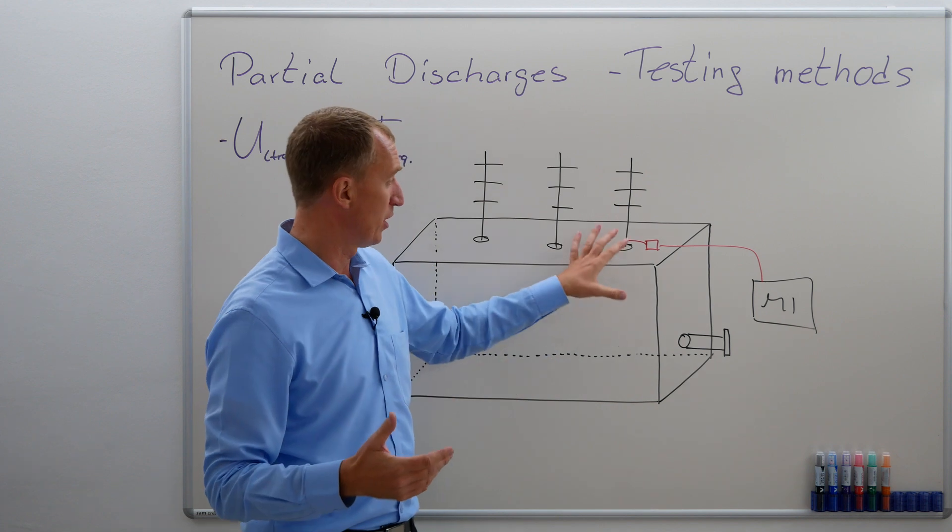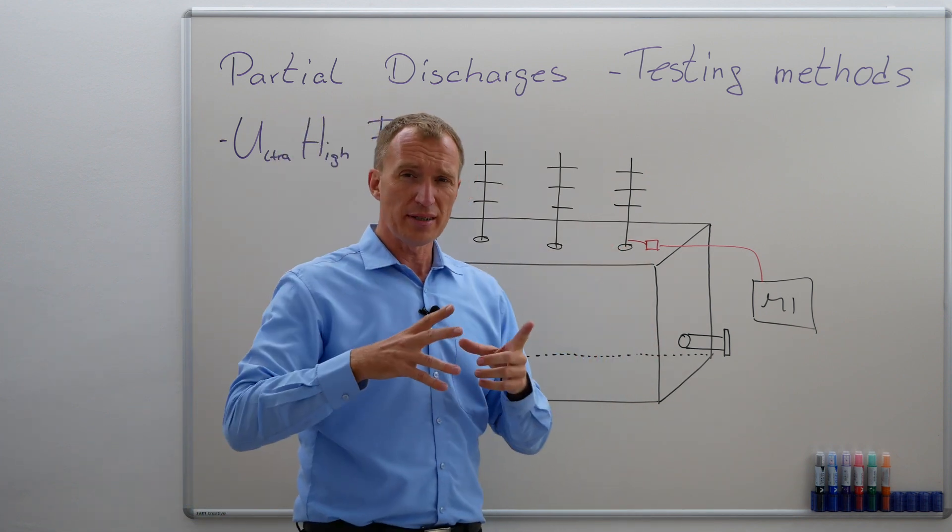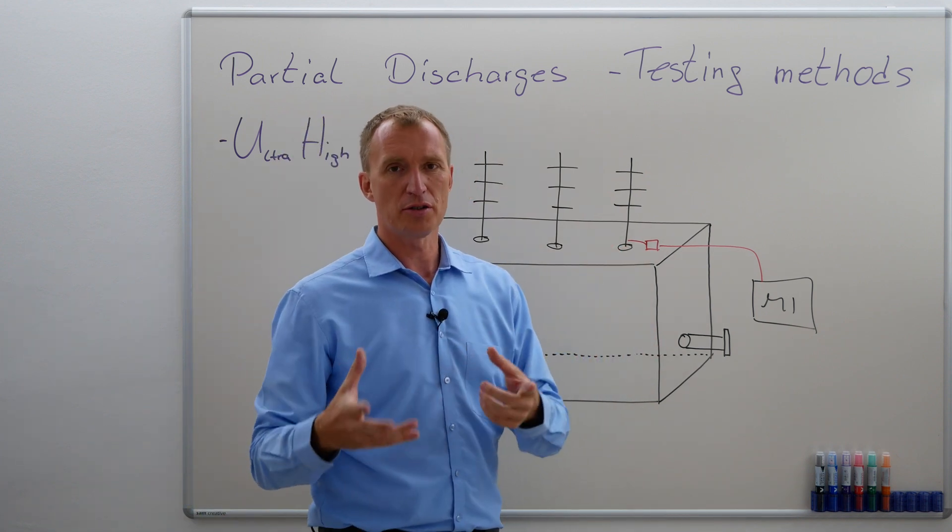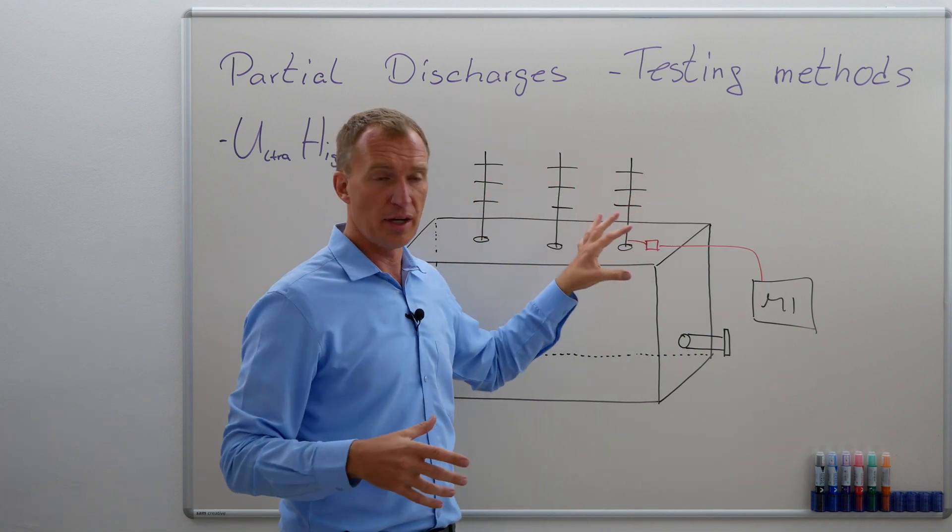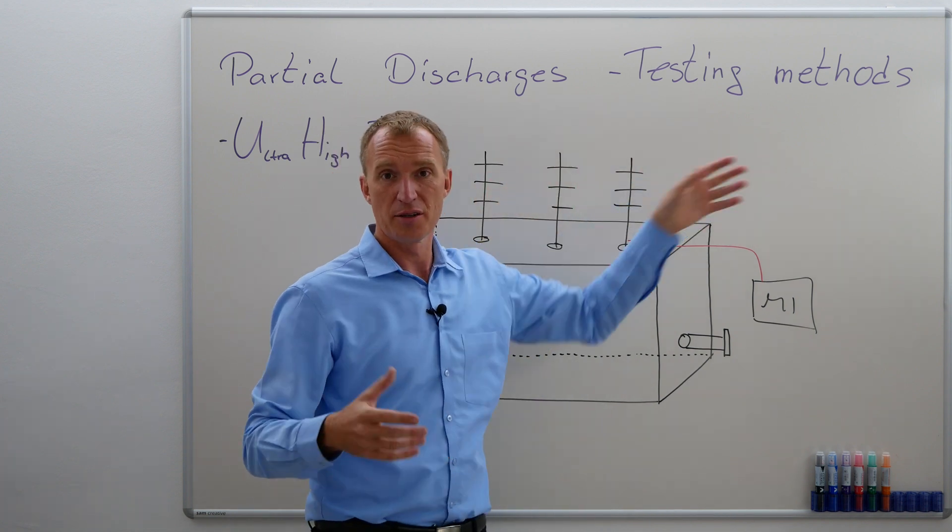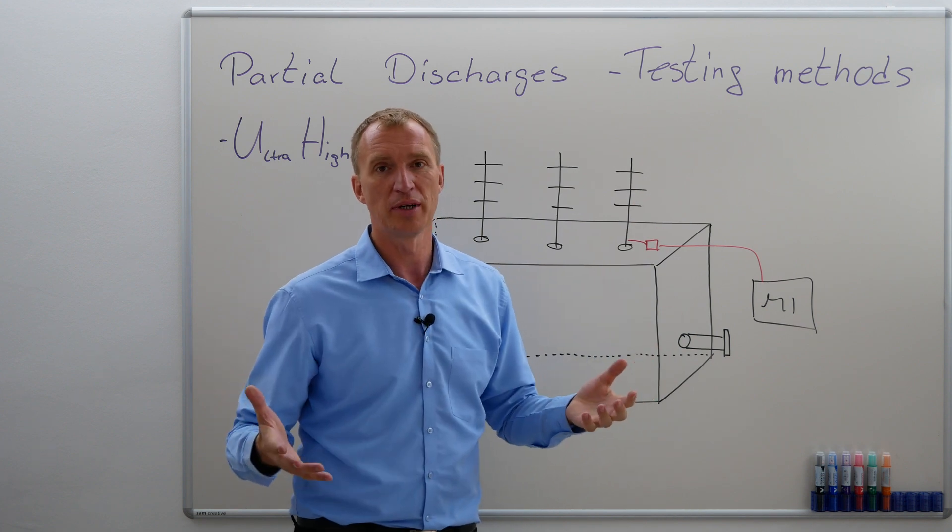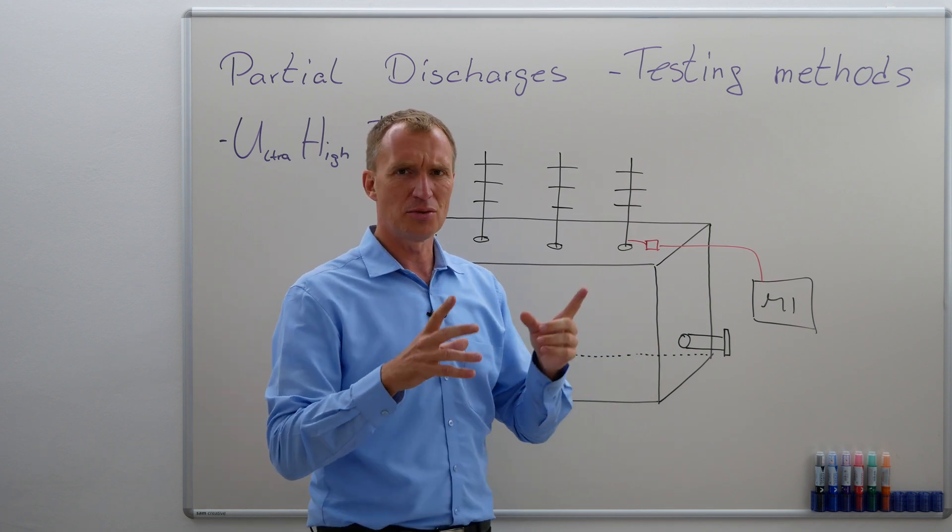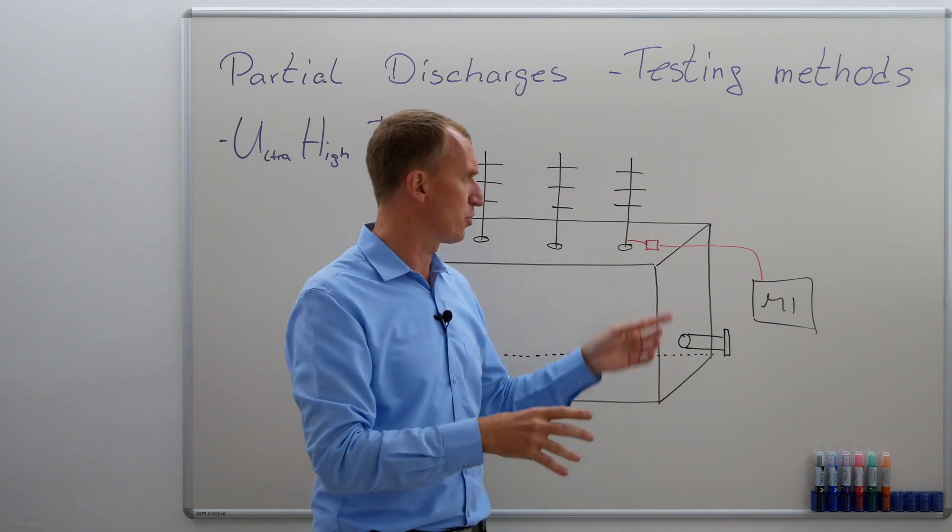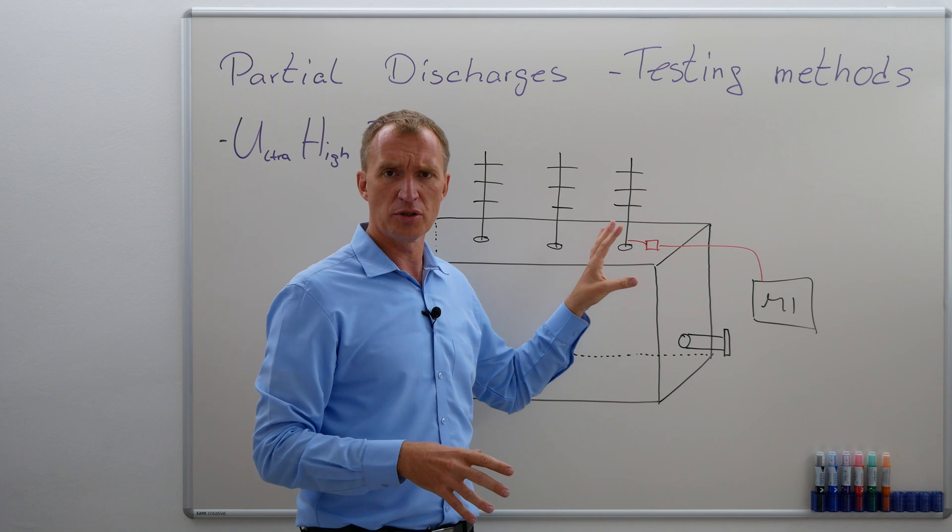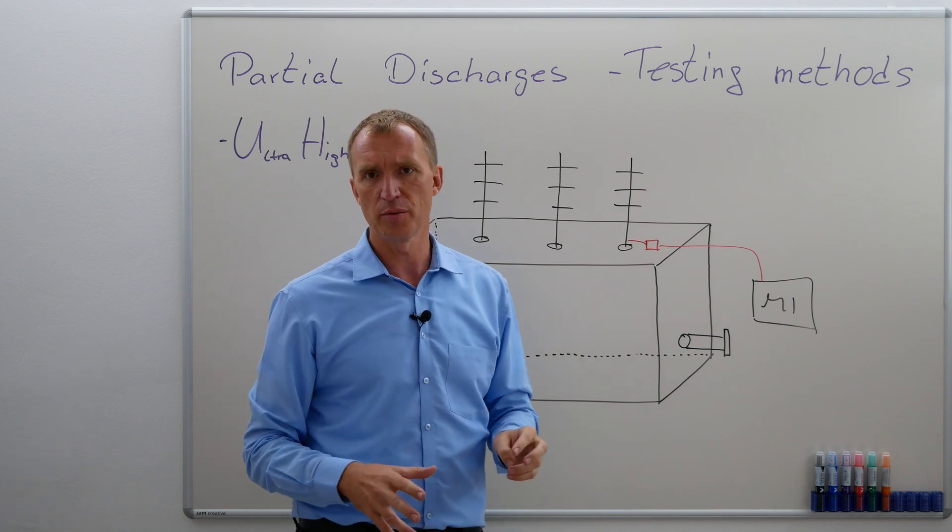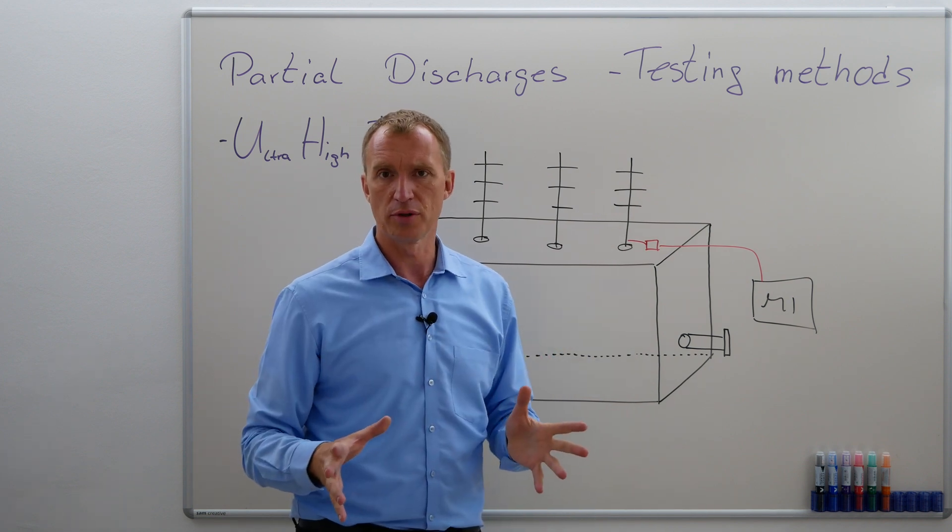We have a small problem. Whenever we are measuring, it's always hard to figure out where is the partial discharge actually coming from. It could come from the bushing, or from one of them, or it could come from outside. The problem is we are not in a shielded room. There are ways to have an idea, do I have a partial discharge very close to my sensor or very deep inside the transformer? But this is a topic for another video.